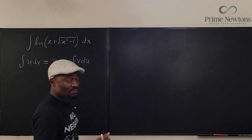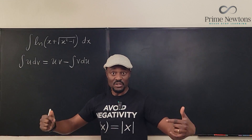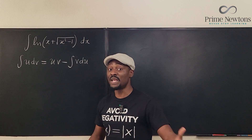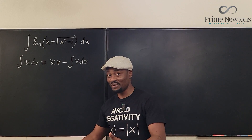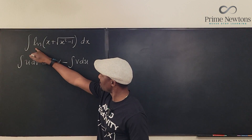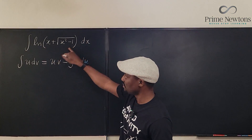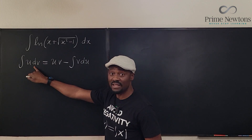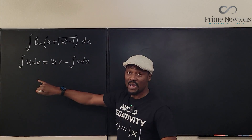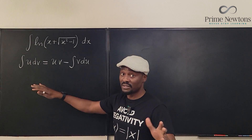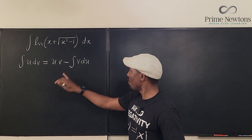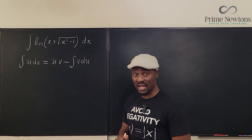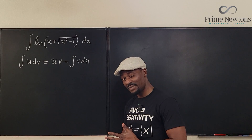Our answer is going to be uv minus the integral of v times du. So what should we pick as our u? Pick what you don't know how to integrate, and that's the natural log function. So we're going to pick this as our u, and we're going to say dx is dv, and we're going to find u and v accordingly.